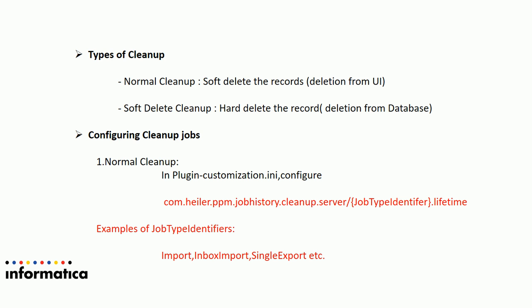Next is configuring cleanup jobs. Cleanup jobs are configured in plugin customization.ini on the server side, present under the server configuration hpm directory. You can see the parameter com.hylot.ppm.jobhistory.cleanup.server. For example, if you don't want import jobs, set import.lifetime equal to 1y, meaning import jobs older than 1 year will be soft deleted and not shown in process overview. For hot folder entries, use the inbox import job type identifier; for export use single export. The respective job type identifiers are listed in the KB linked to the video.